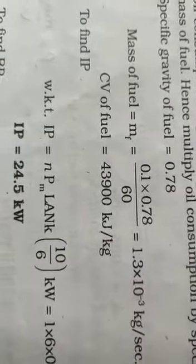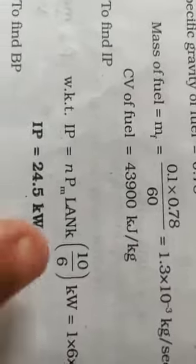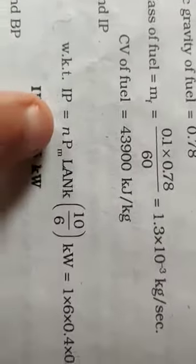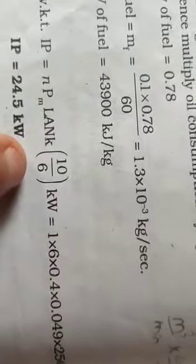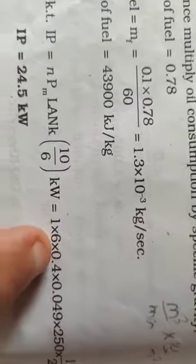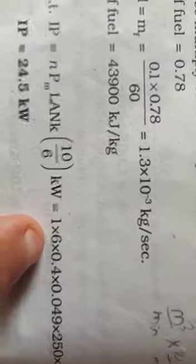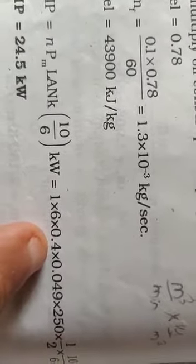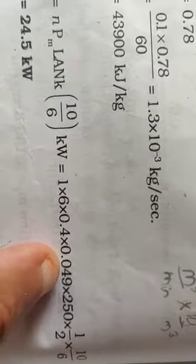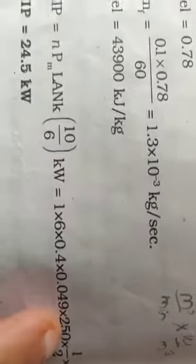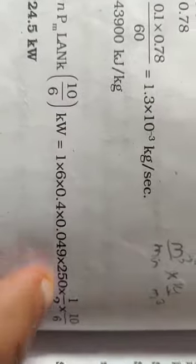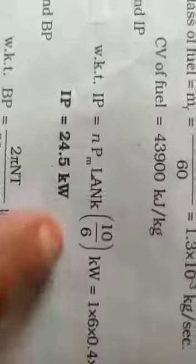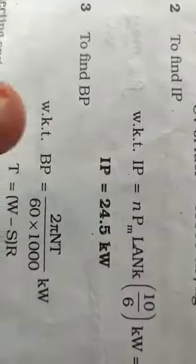To find IP, the standard formula is IP equals mean effective pressure times length times area times n times k divided by 60. That is 1 single cylinder, mean effective pressure 6 bar, length 0.4 meters, area 0.049 meter square, n is 250, k is 1/2, times 10 to the 6. So IP equals 24.5 kilowatts.